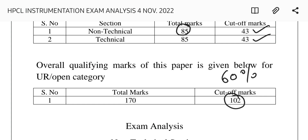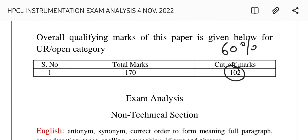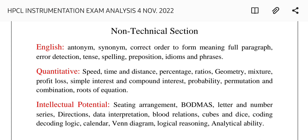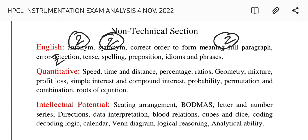In the non-technical section, questions were majorly asked from English, quantitative aptitude, and intellectual potential. In English, questions came from antonyms and synonyms — around two questions each — plus paragraph ordering, error detection, tense, and spelling. There were a total of 17 questions from English.